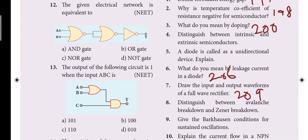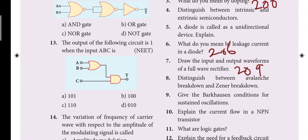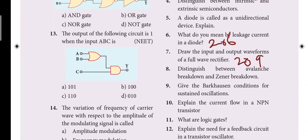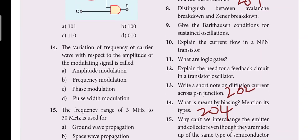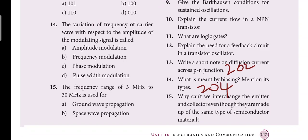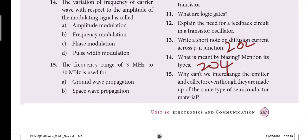Next question: what do you mean by leakage current in the diode, page 206. Seventh question: draw the input and output waveforms of a full wave rectifier, that is 209. Next, eighth question also I will give. Next, thirteenth question: write a short note on diffusion current across PN junction. Fourteenth question: what do you mean by biasing? Mention its type, 204.